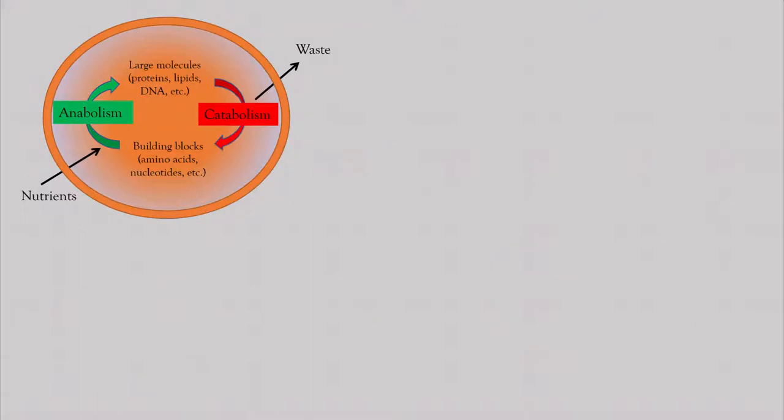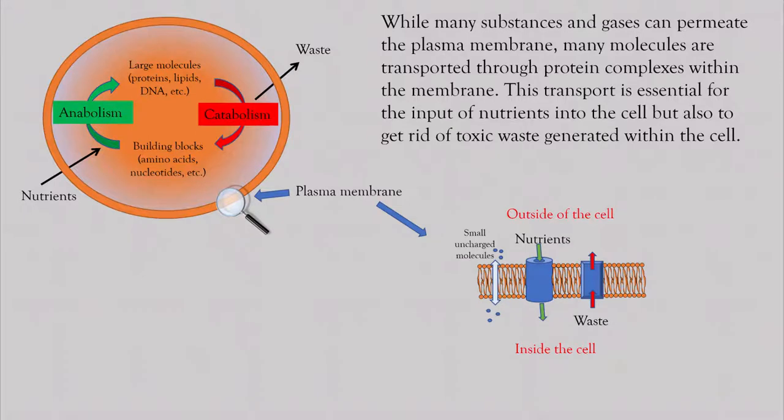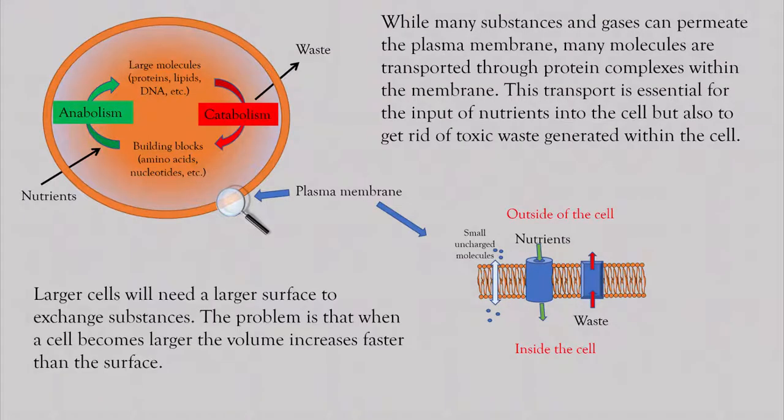While many substances and gases can permeate the plasma membrane, many molecules are transported through protein complexes within the membrane. This transport is essential for the input of nutrients into the cell, but also to get rid of toxic waste generated within the cell.